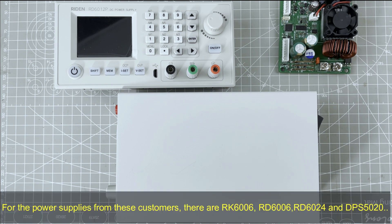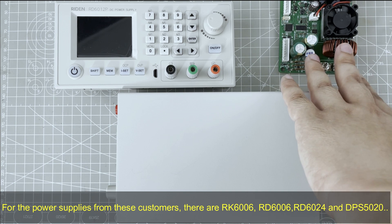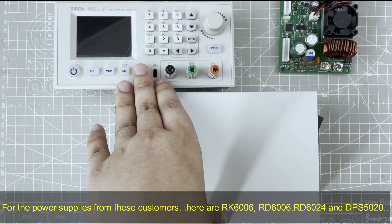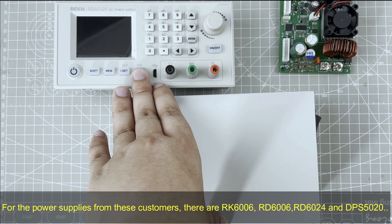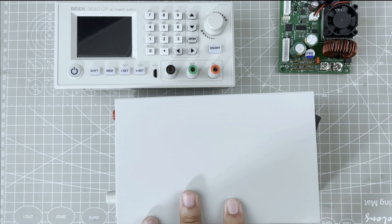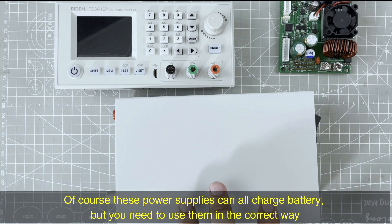For the power supplies from these customers, there are RK6C06, DPS 5020, 5015, RD6C06, and RD6C24. They all do not work normally after charging battery. Of course, these power supplies can all charge battery, but you need to use them in the correct way.